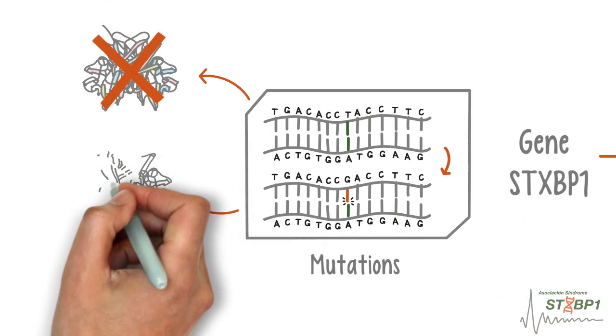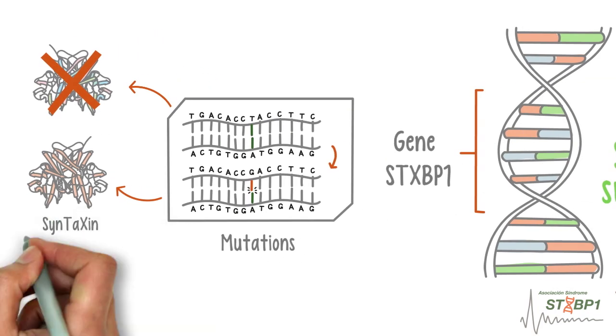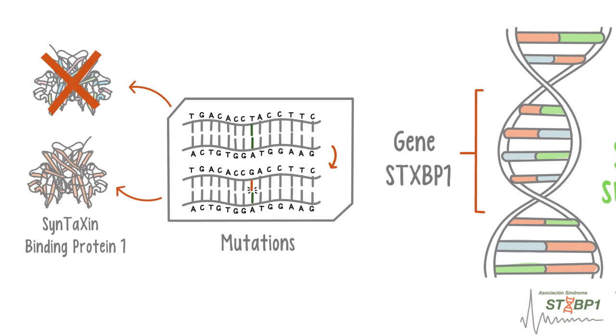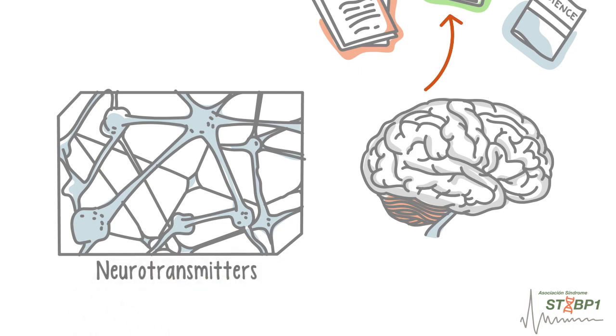The STXBP1 gene contains the information to produce the syntaxin-binding protein 1. This protein plays a vital role in the release of chemicals into the brain that are used by brain cells to communicate with each other.